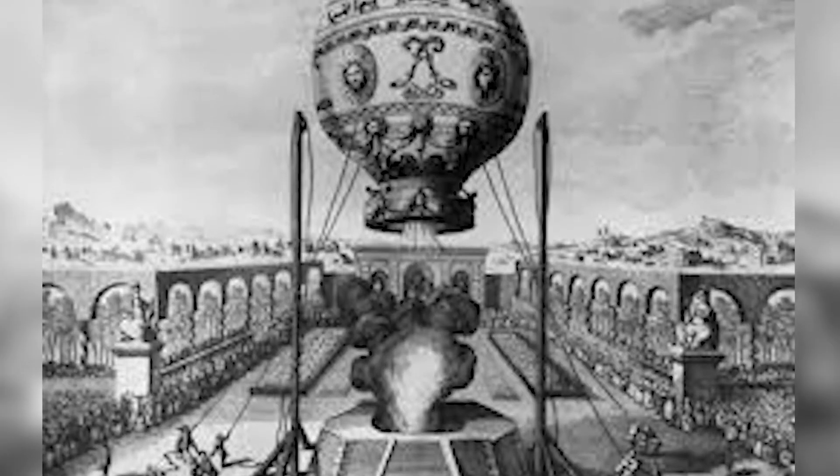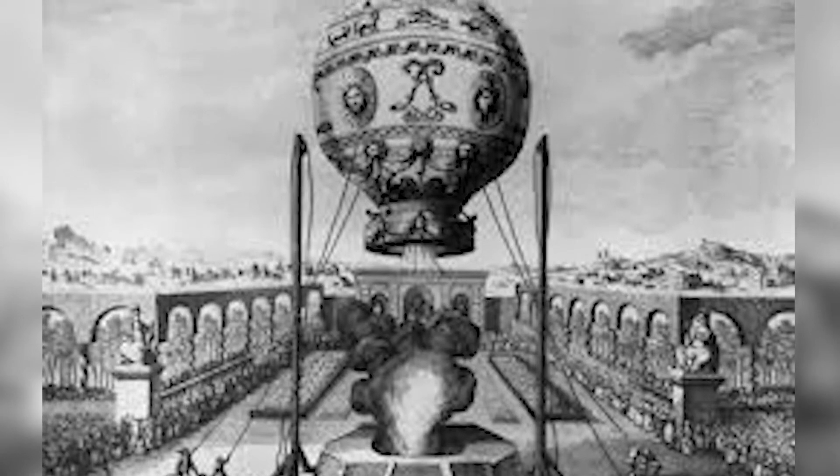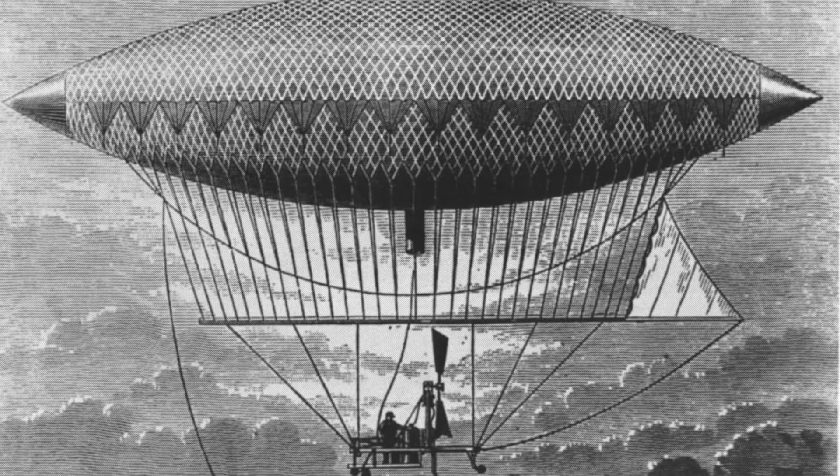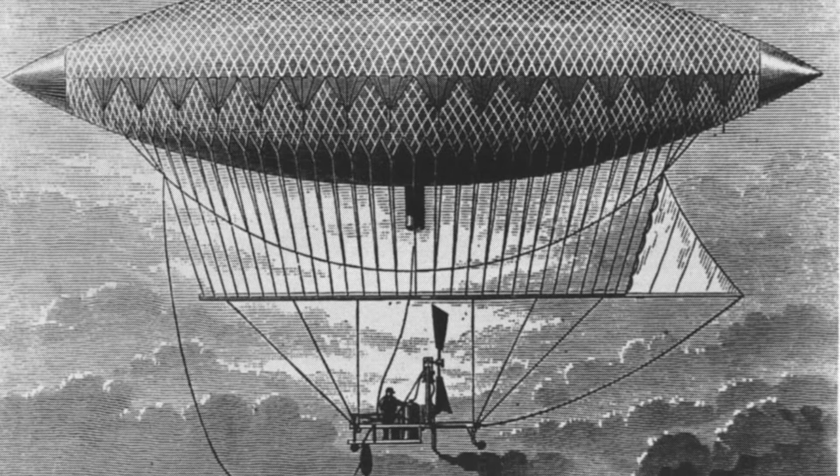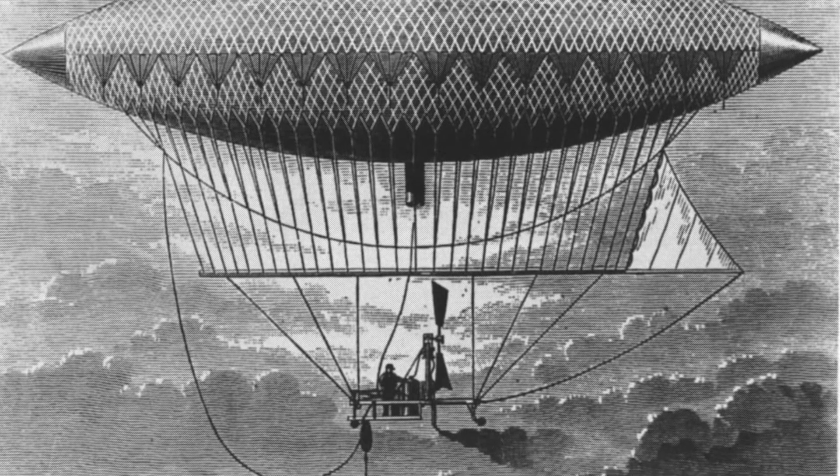The main issue with these balloons was that their path was determined by the wind. The next step towards viable transportation was a controllable airship. In 1852, this became a reality.